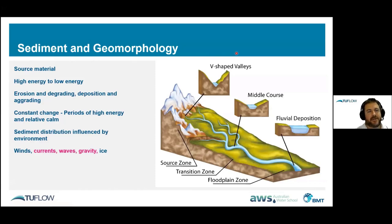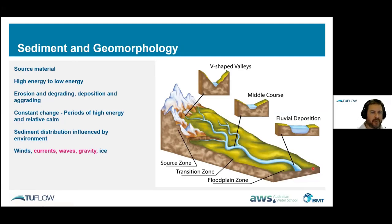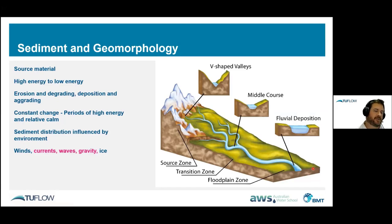Fundamentally, sediment transport comes down to moving things from areas of high energy to lower energy. We have different source material depending on the geology of an area. Moving from the steep, high-energy upper catchment through the transitional transport zone down to lower-energy floodplain environments: high energy means erosion and lowering of the profile; lower energy means deposition and raising of the profile. Everything's always changing — in nature we have periods of very high energy floods or coastal storms followed by calm. Sediment transport is influenced by winds, currents, waves, gravity, or ice.